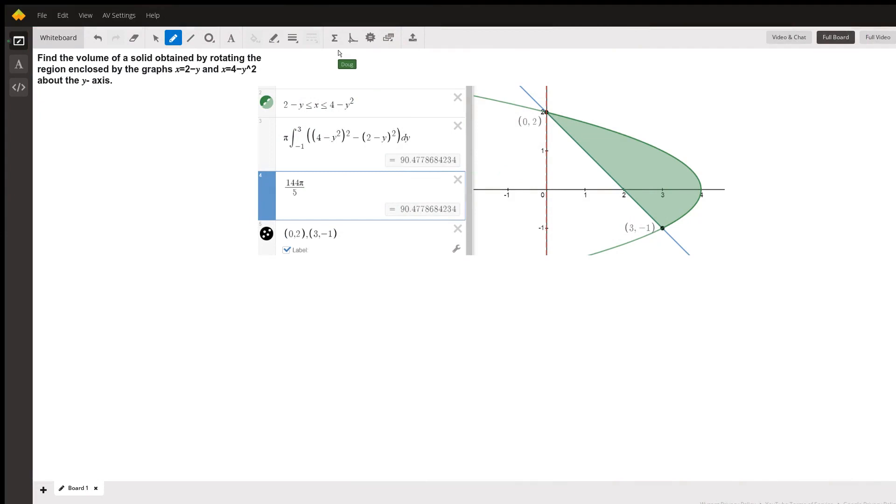Let's take a look at this graph over here and see what's going on. This green graph is the graph of x equals 4 minus y squared, and this blue line is the graph of x equals 2 minus y.